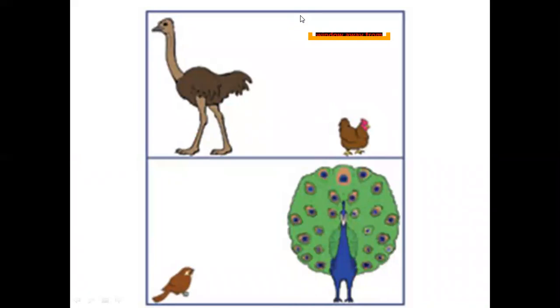See ostrich is looking tall. That is a bird. Ostrich is tall bird. Then hen is the short bird. Next see sparrow is looking short. Then peacock is looking tall.